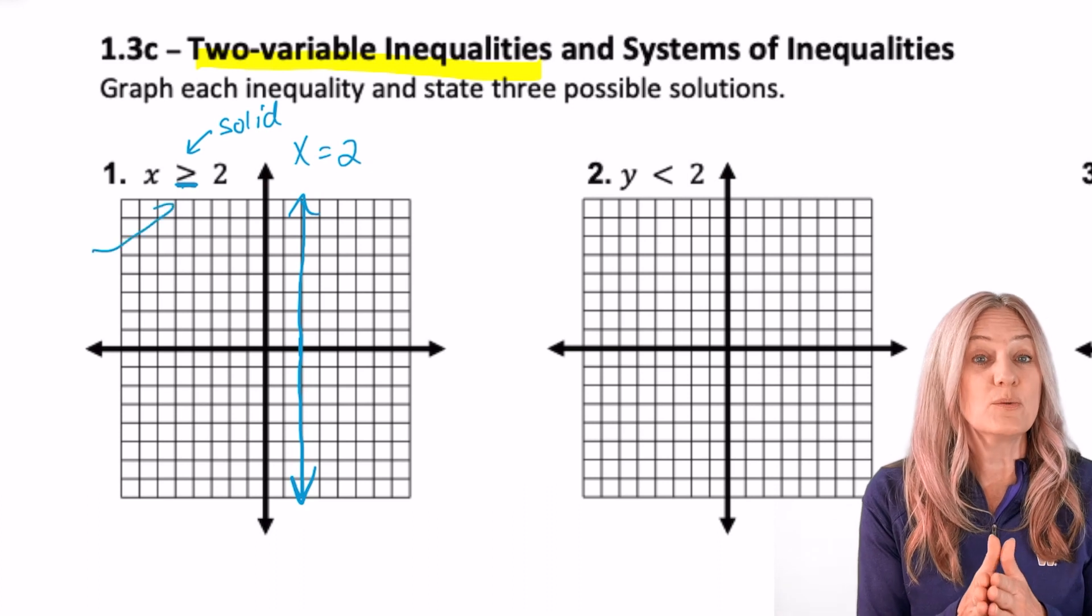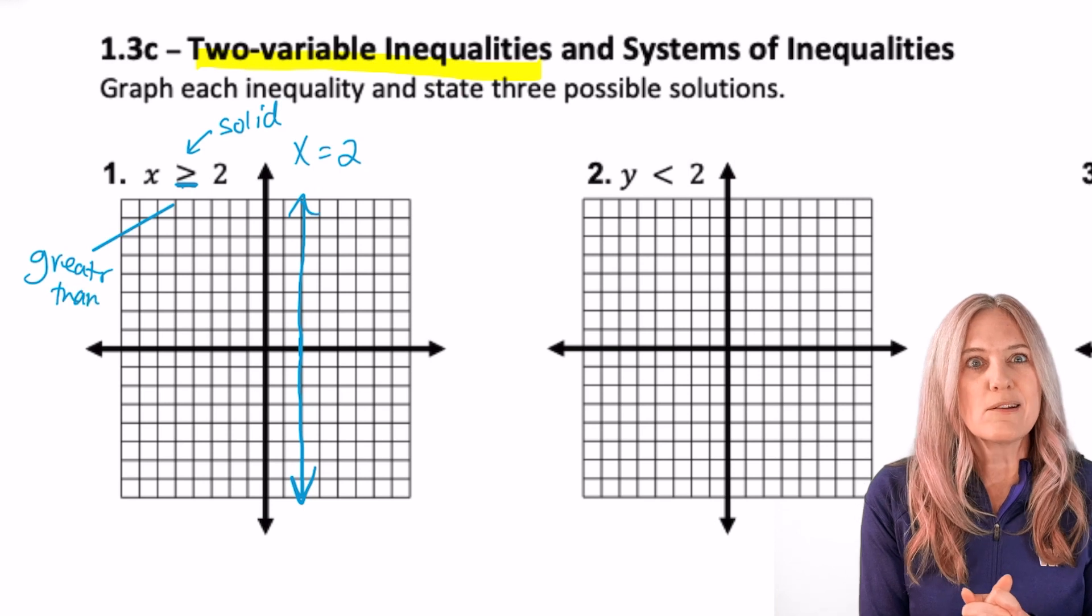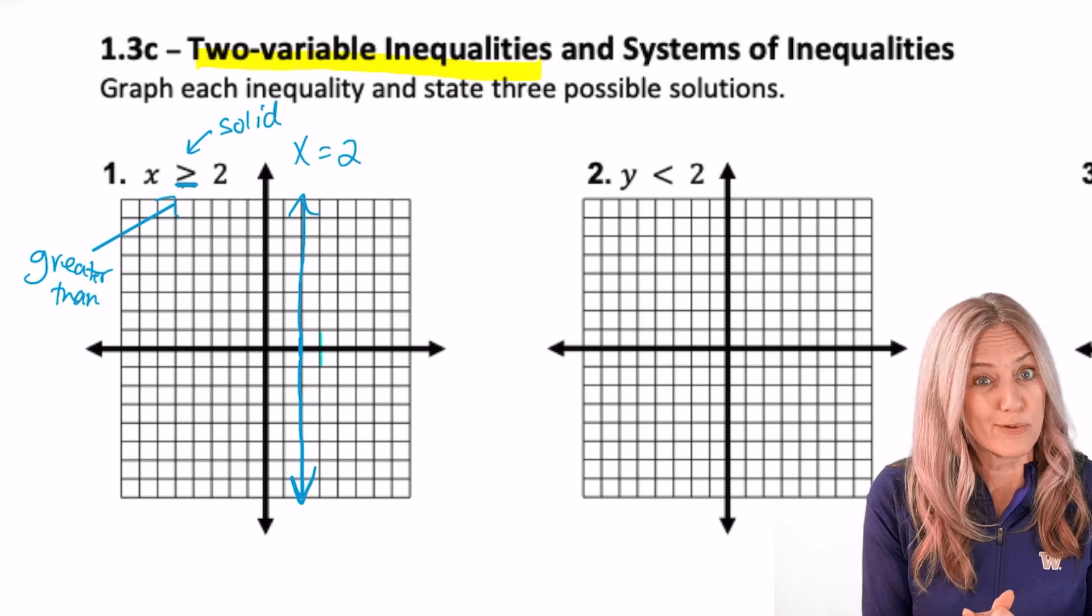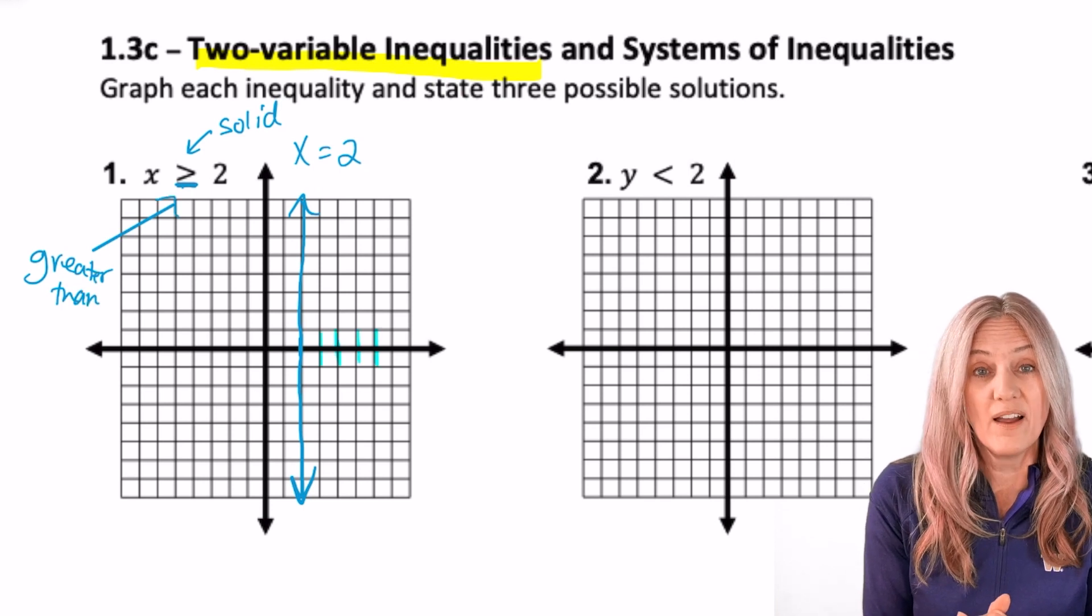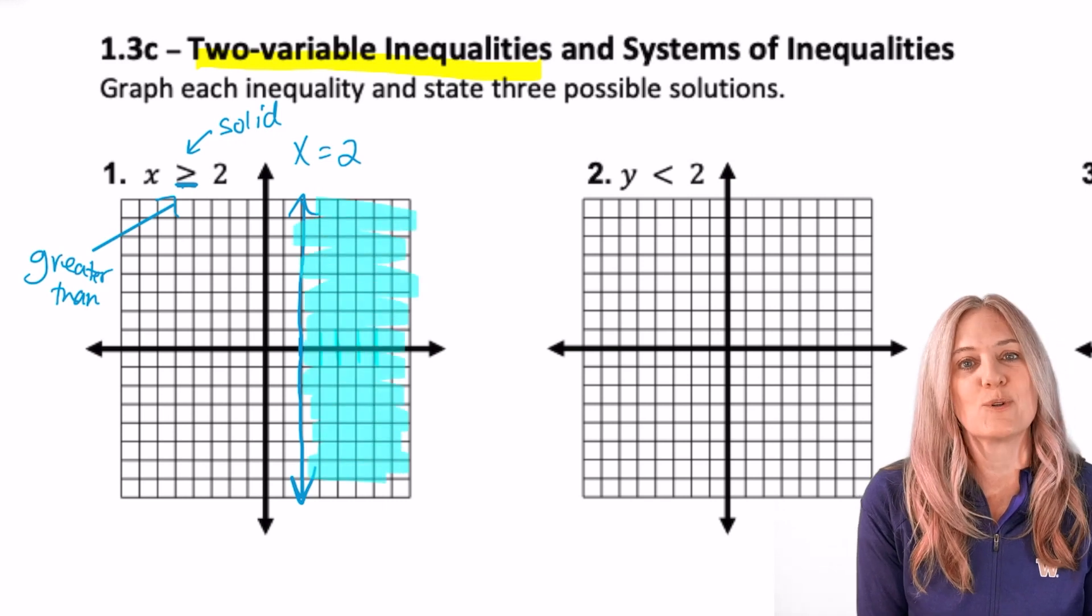Last, we have to decide which side to shade. Well, x greater than 2. Well, that means like 3, 4, 5, and so on. We'll shade all points to the right of the line x equals 2.